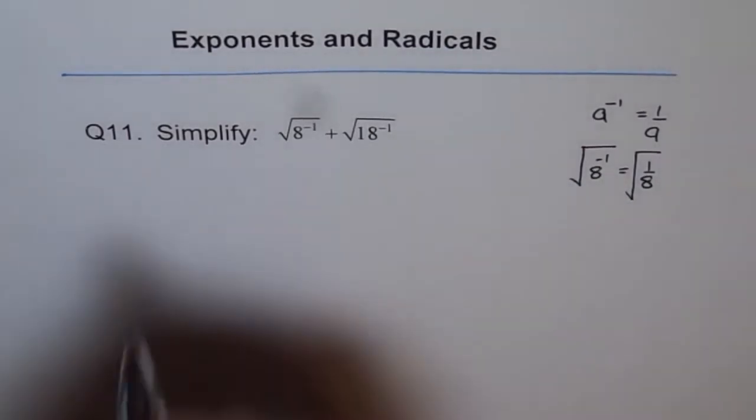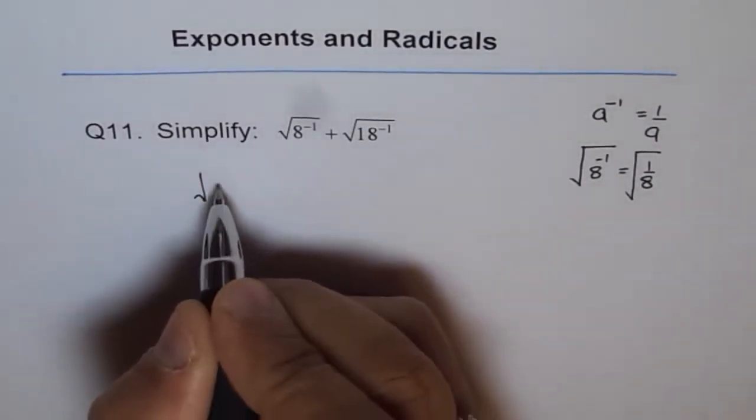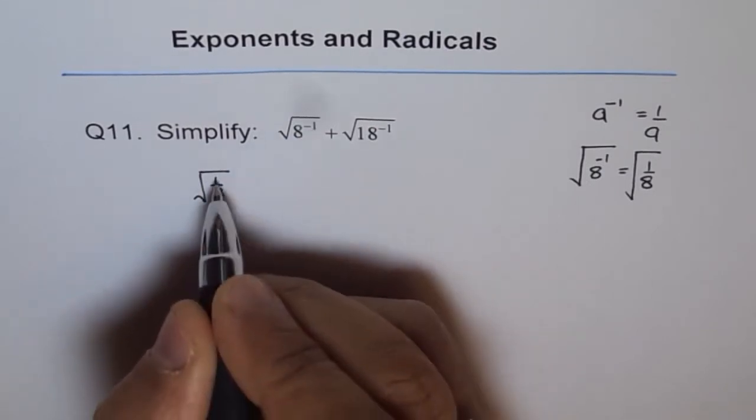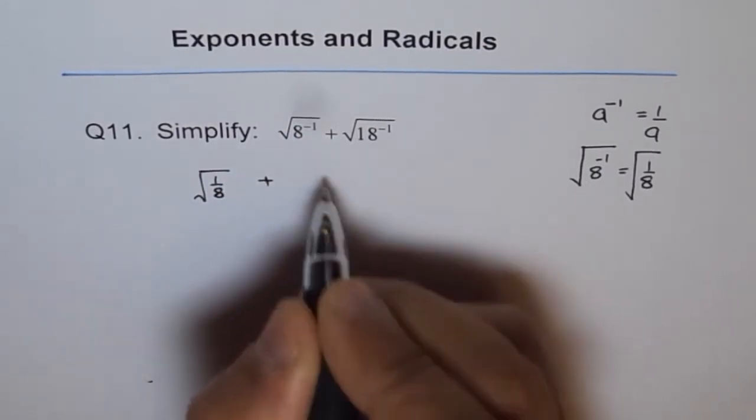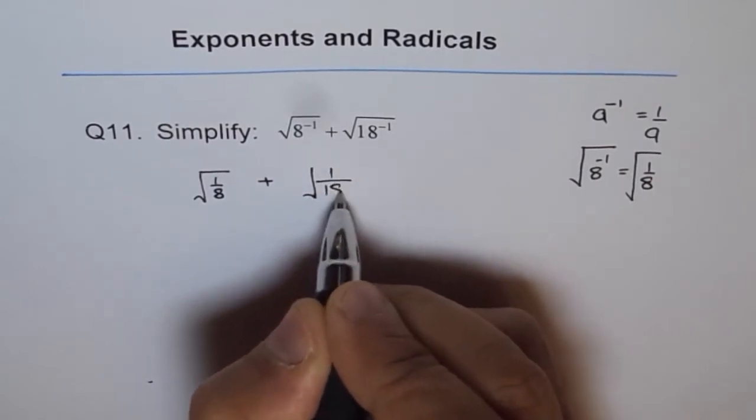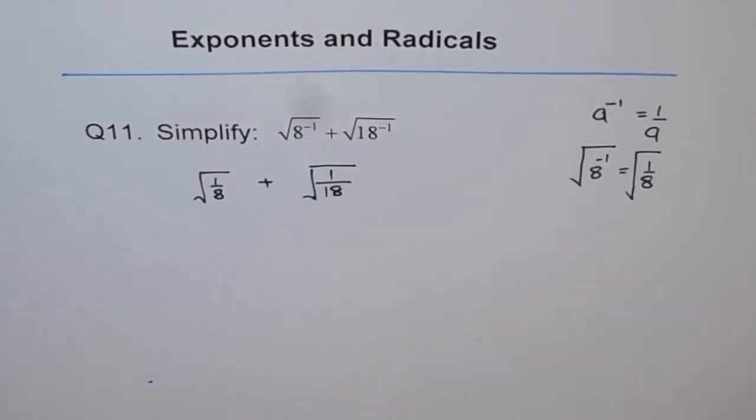So I can write this as square root of 1 over 8. So that is minus 1 is 1 over 8. Plus square root of 1 over 18. 18 to the power of minus 1. This is how it can be written.